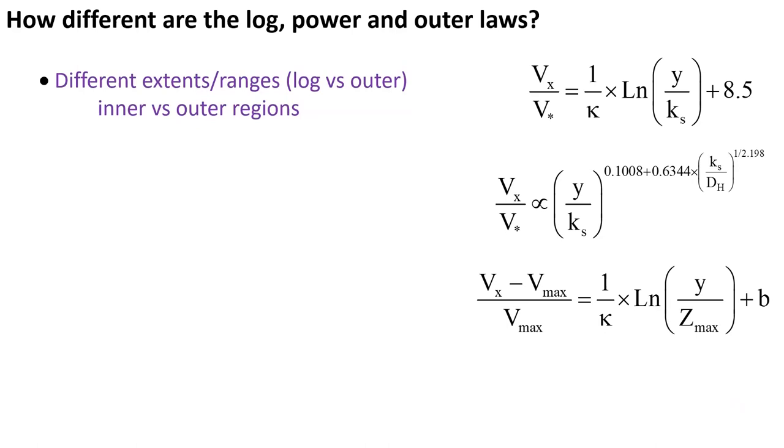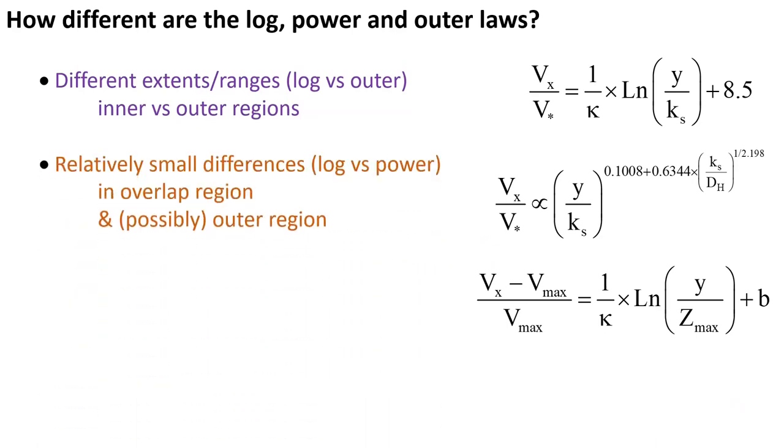They correspond to different extents, in particular between the logarithmic profile and the outer law, but they tend to have a relatively small difference between the log and the power law in the overlap region and sometimes in the outer region.